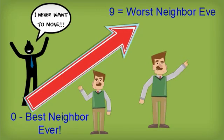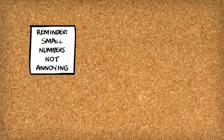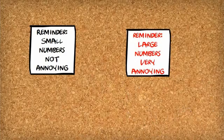But if my neighbor is a 9, then my neighbor is really annoying. I can't stand living next door to him, so I want to move away. The smaller the number, the less annoying. The larger the number, the more annoying.